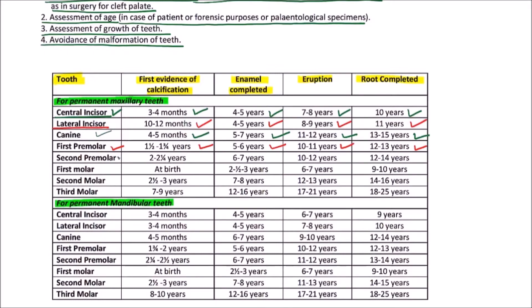For the maxillary second premolar, the first evidence of calcification occurs between 2 to 2¼ years, enamel is completed by 6 to 7 years, eruption occurs by 10 to 12 years, and the root is completed by 12 to 14 years.